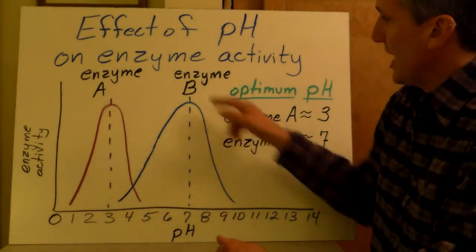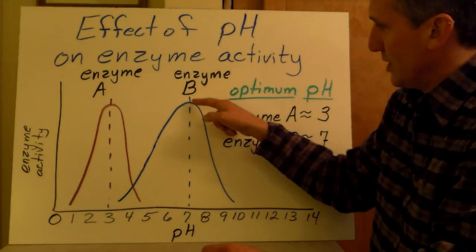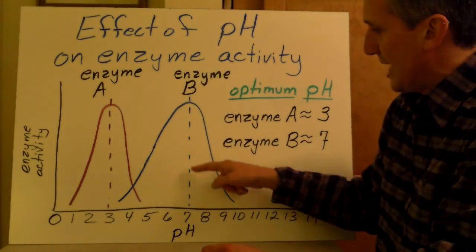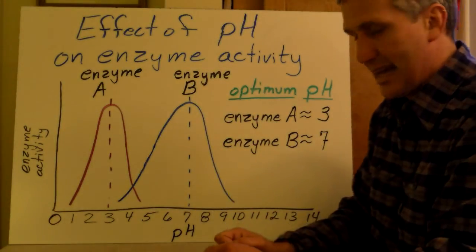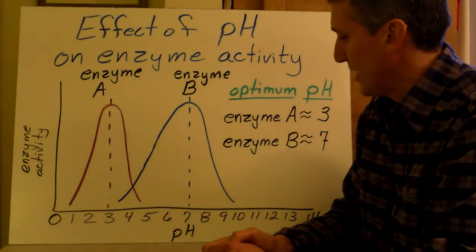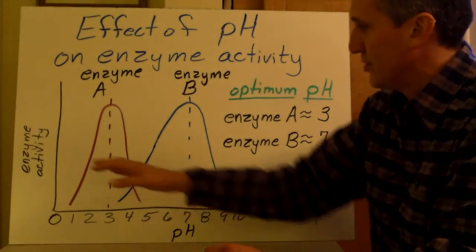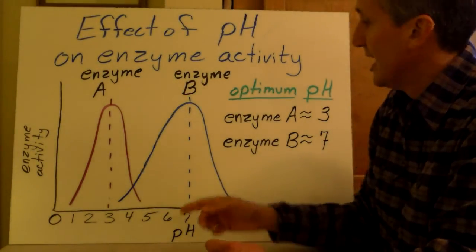If we compare that to enzyme B, we find the highest point of activity, which is here, and then we draw a line down, and we see that enzyme B has an optimum pH of 7. So these are two different enzymes and they have two different pH ranges.